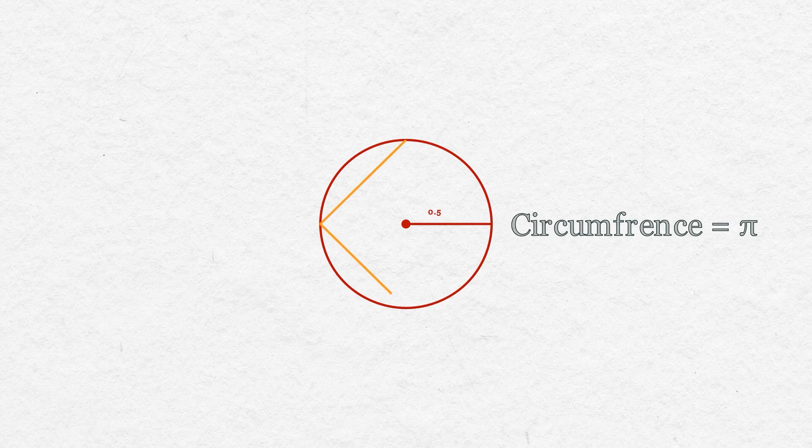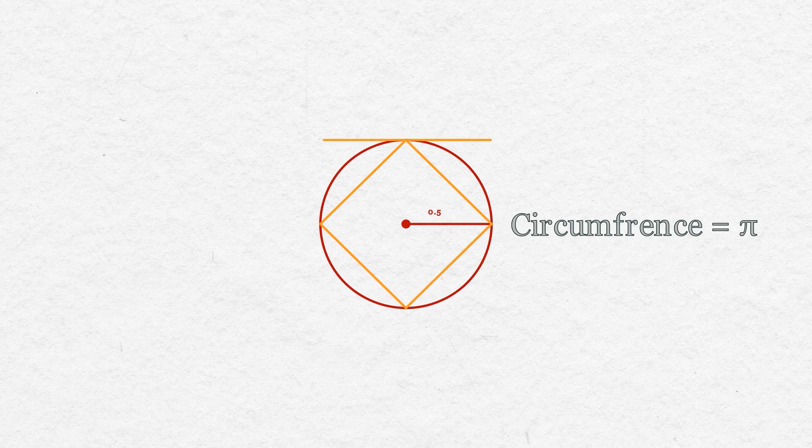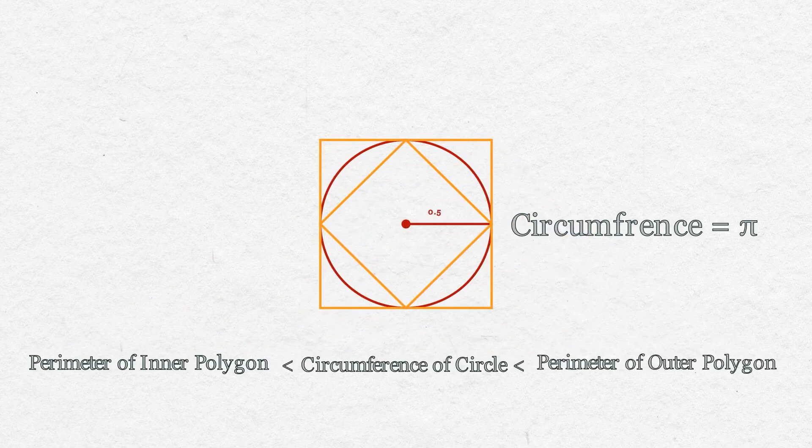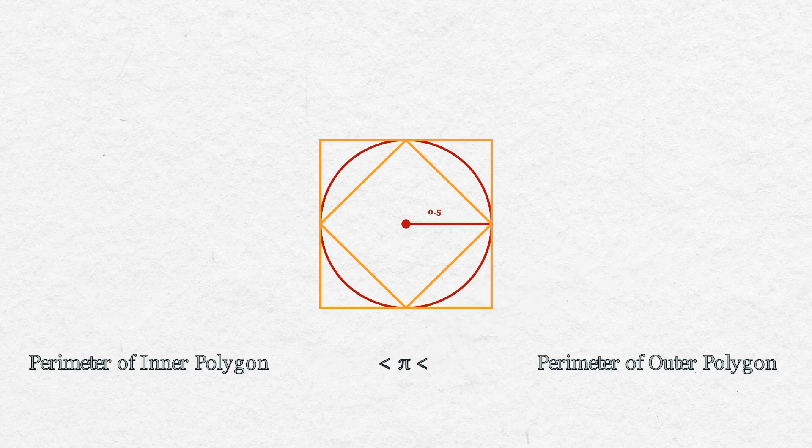Then he created two polygons, one inscribed inside the circle having perimeter less than the circle, and one circumscribing the circle having perimeter more than the circle, which gave us this inequality. And using the calculation, we can put circumference equals to pi, which gave us this limit on pi.